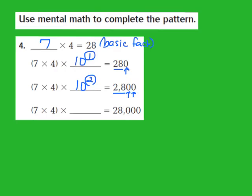Let's take a look at the last part in this pattern. They give me 7 times 4 times blank equals 28,000. I'm missing the power of 10. I know that 28 was the answer to my basic fact, and I see that behind that 28 there are three 0s. So my missing part should be the third power of 10, because my exponent should match the number of 0s in the product — 1, 2, 3 — and my answer checks out.